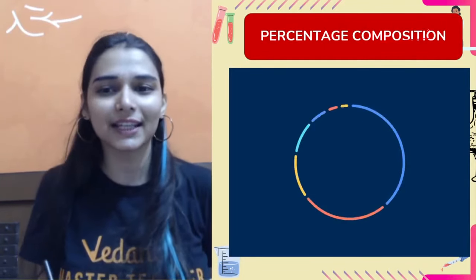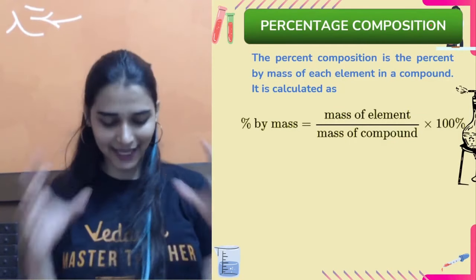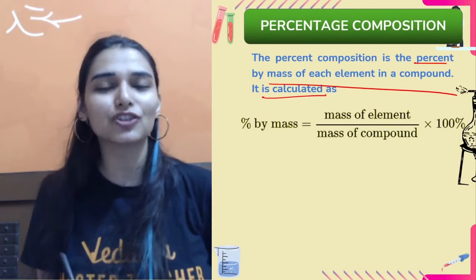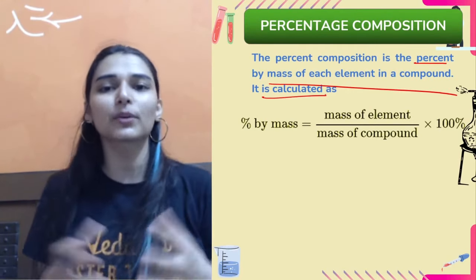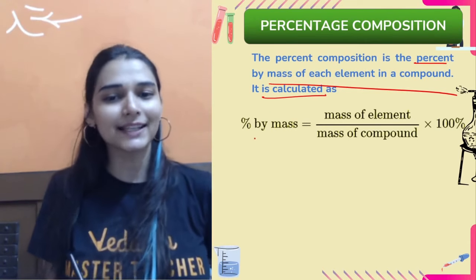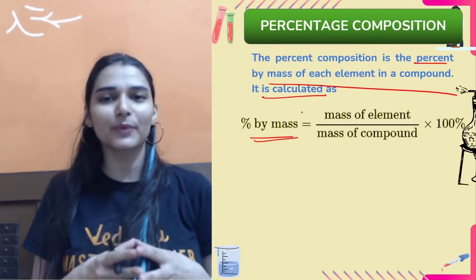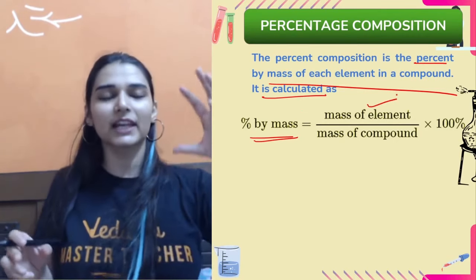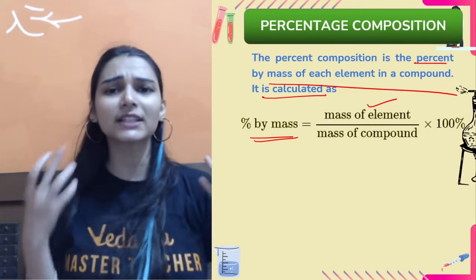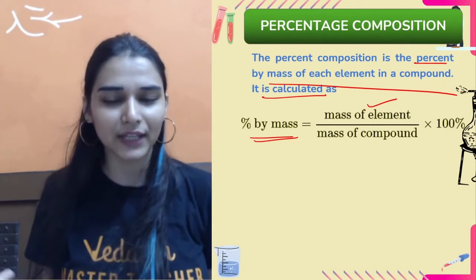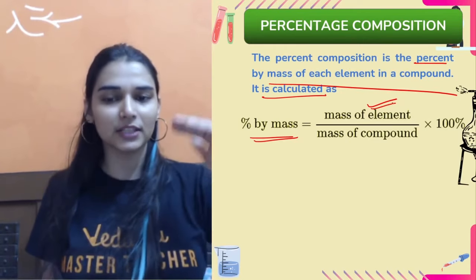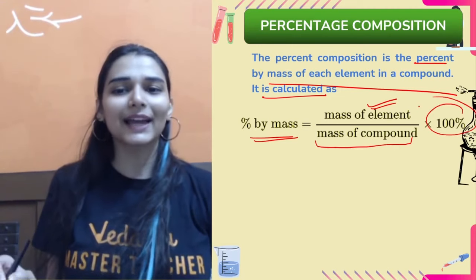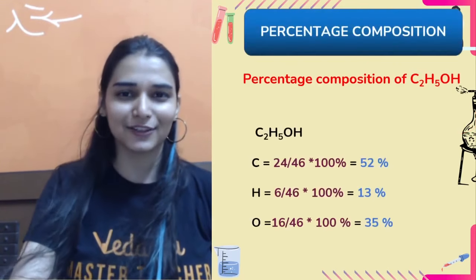Next: percentage composition — this is the easiest thing in the chapter. Percentage composition is the percent by mass of each element in a compound, just like calculating your percentage in school. You always keep the mass of the element in the numerator, mass of the overall compound in the denominator, and multiply by 100.